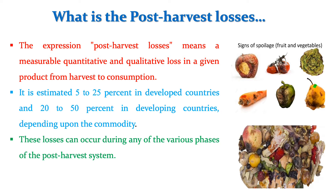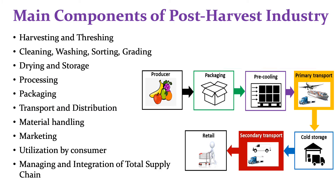These losses can occur during various stages of post-harvest unit operations. These are the main components of post-harvest technology. For example, harvesting, threshing, cleaning, washing, sorting, drying, storage, processing, packaging, transportation, distribution, material handling, etc. The losses occur at every stage of these post-harvest unit operations.